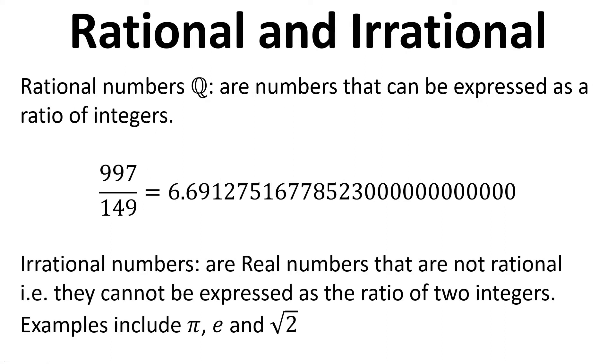Then we move on to the irrational numbers. These are real numbers that are not rational, so they can't be expressed as a ratio of two integers. Examples include pi, e, and the square root of 2.